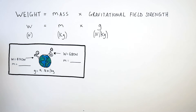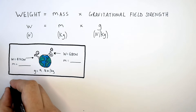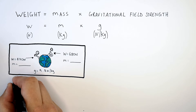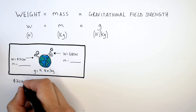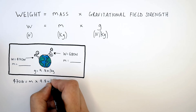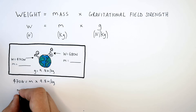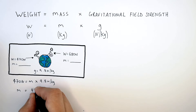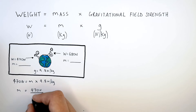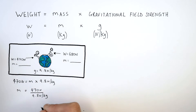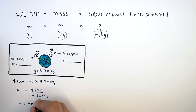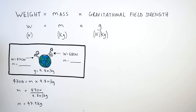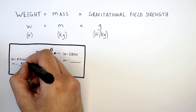For person B, we use the equation weight equals mass times gravitational field strength. Substituting in the numbers: 470 newtons equals mass times 9.8 newtons per kilogram. Rearranging for mass: mass equals 470 newtons divided by 9.8 newtons per kilogram, which gives you a mass of 47.9 kilograms. So this person's weight is 470 newtons, but their mass is 47.9 kilograms.